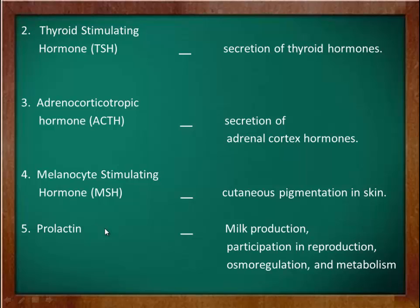The fifth hormone is prolactin. Prolactin is unique among the pituitary hormones as it is under predominant inhibitory control from the hypothalamus. It stimulates milk production in the mammary glands of females and also participates in the control of reproduction, osmoregulation, growth, and metabolism of the human body.